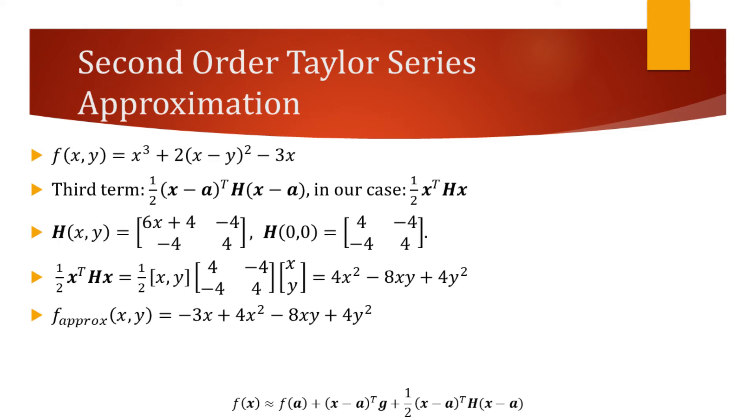For our final term, we'll have to find the value of the Hessian matrix at the point we are approximating, take the dot product two times, and divide the result by two. All the necessary calculations are displayed on the slide. First, the Hessian matrix is derived, then it is evaluated at the origin. After that, the dot products and division by two is performed. The result of all these operations is added to our first order approximation, and we obtain the second order Taylor series approximation.